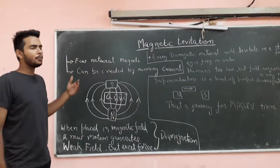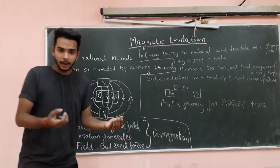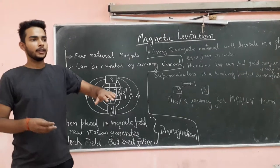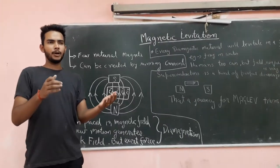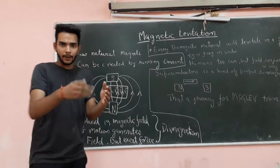We have few natural magnets which have inbuilt magnetism in them. But if you flow current through a conductor, it also behaves as a magnet. A magnetic field creates around that.